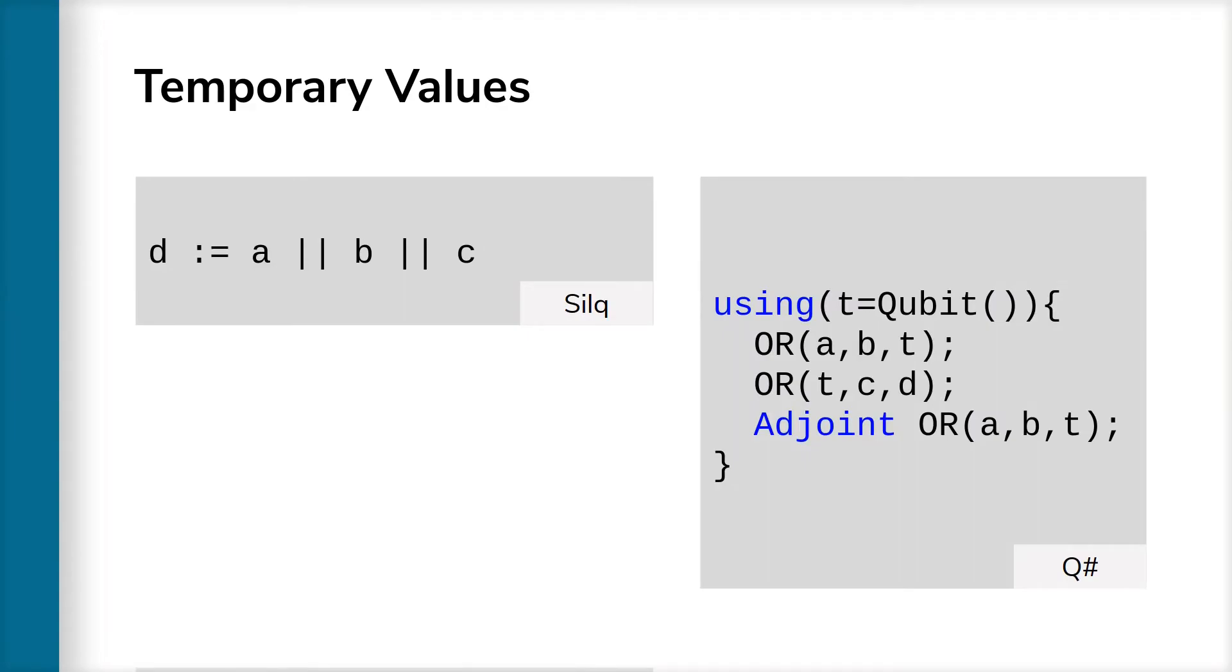In Q-sharp, you need to explicitly allocate a temporary qubit T and store the OR of A and B into T and then store the OR of T and C into D. However, the computation does not end there. Namely, you need an additional step to uncompute T, indicated by adjoint, which reverses the computation that calculated T, thus clearing the temporary information stored in T. We will see later why this is absolutely necessary.